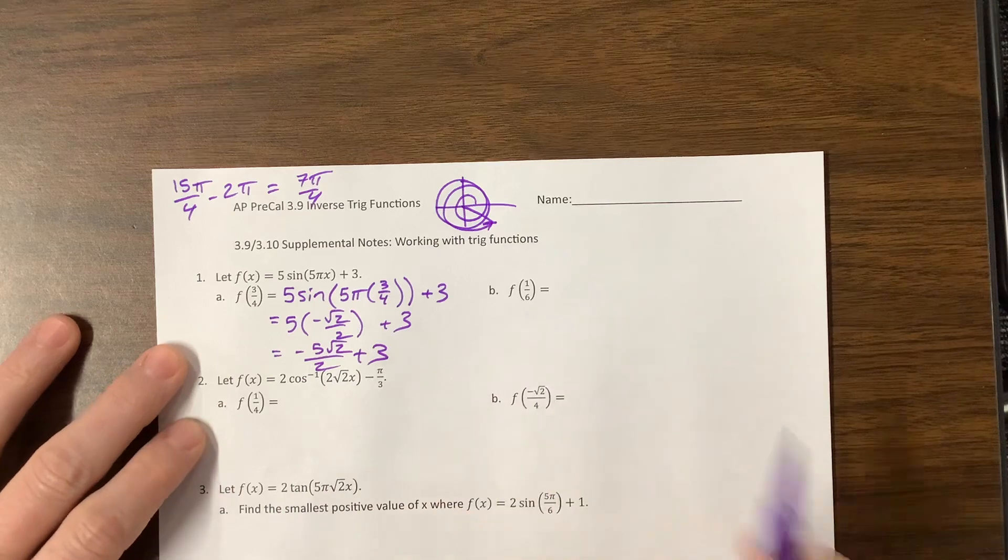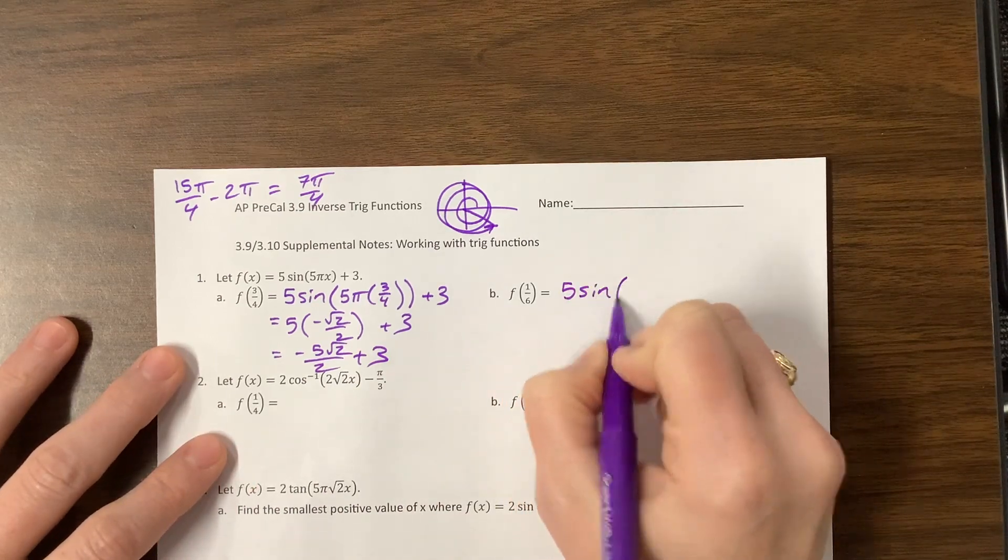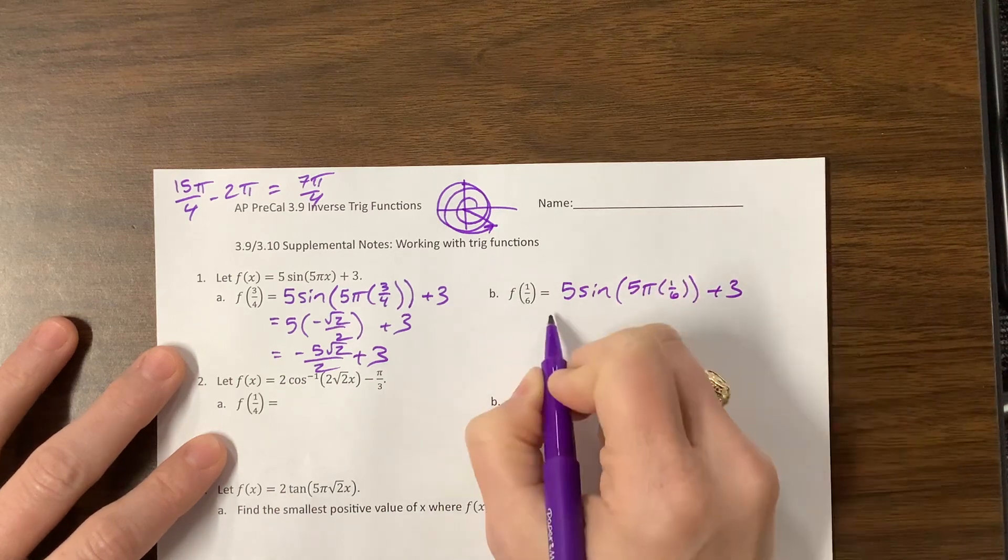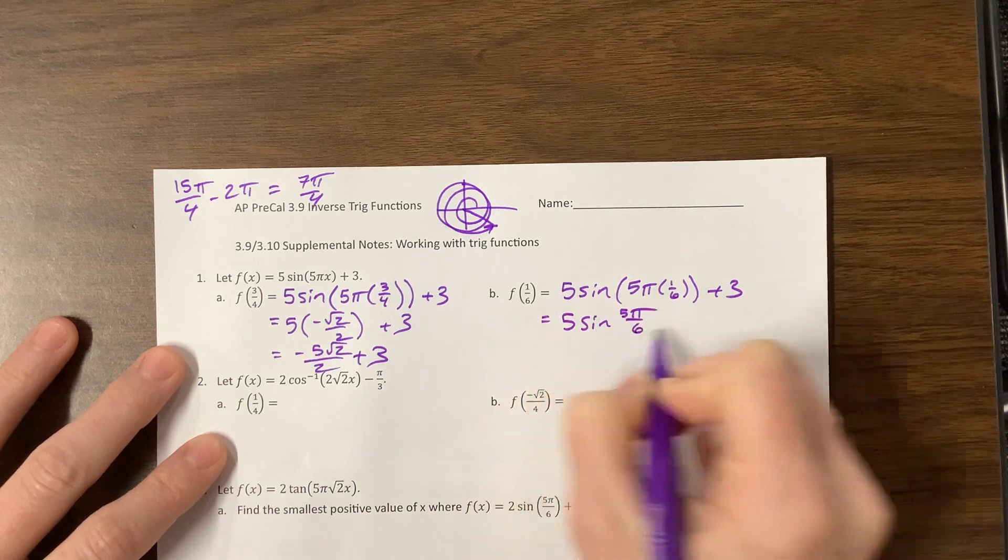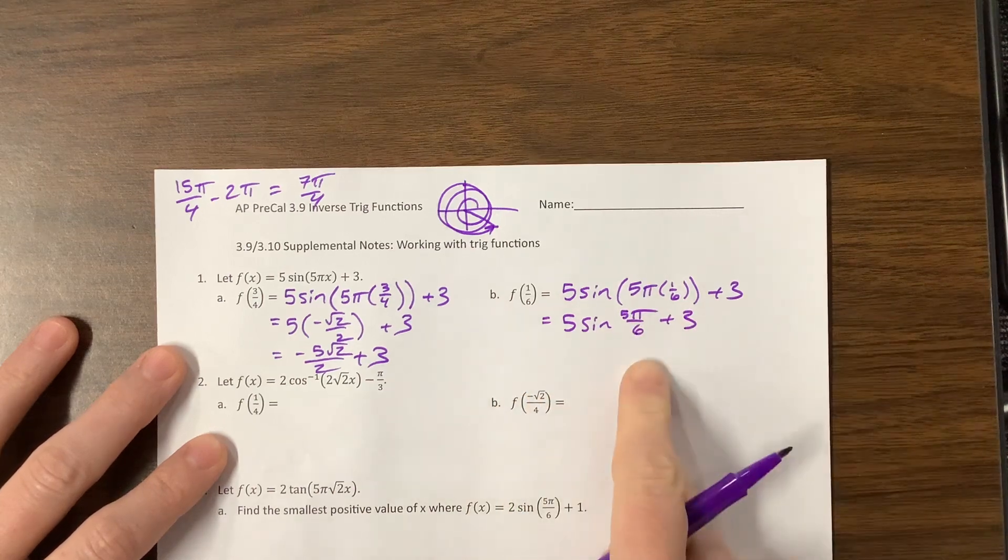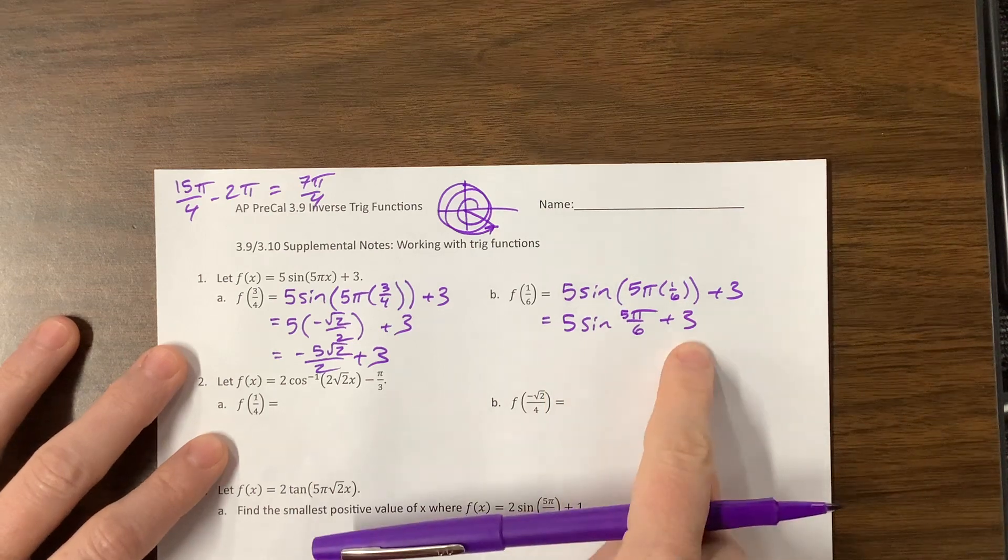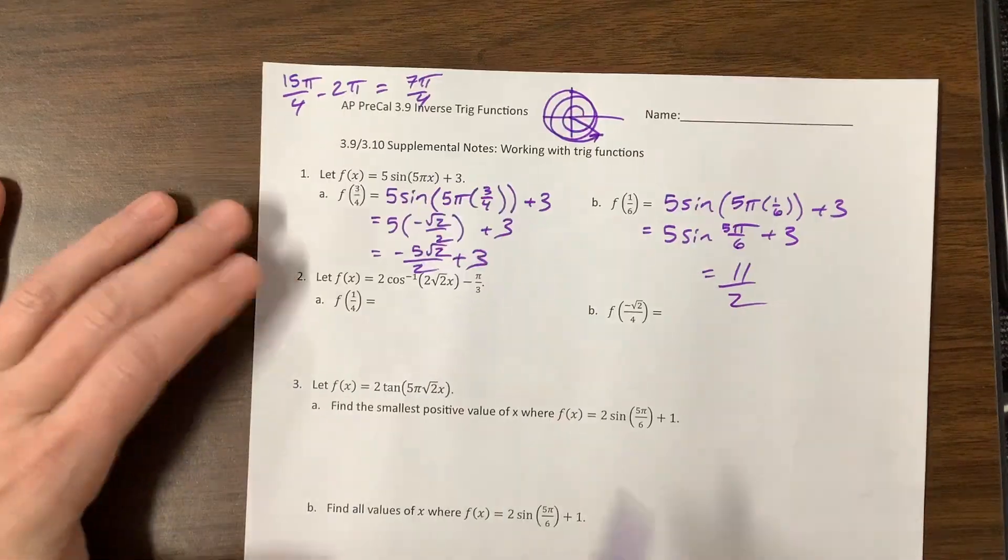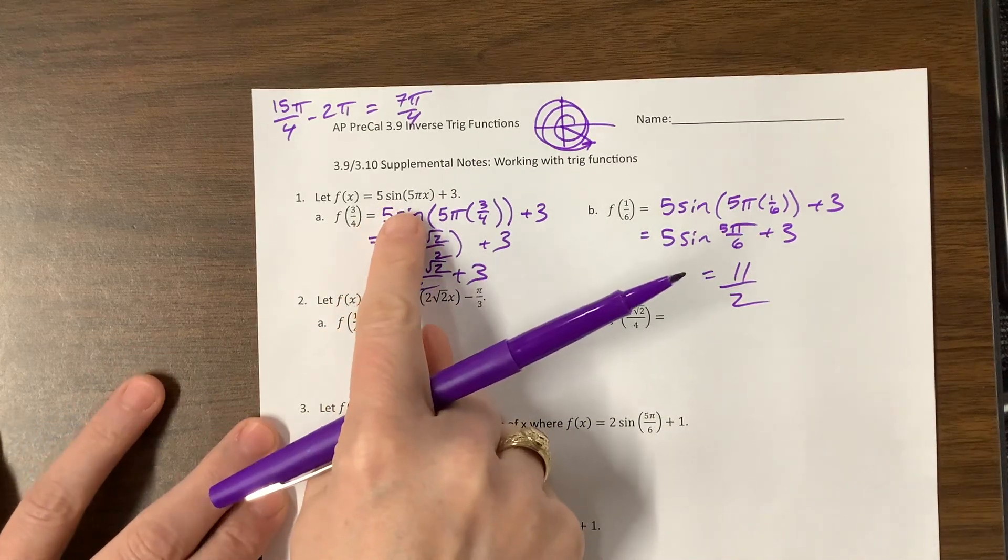Then we could say, what happens when I plug in 1/6? This is 5 sine of 5π times 1/6 plus 3, so 5 sine of 5π/6 plus 3. Sine of 5π/6 is 1/2. This gives me 5/2 plus 6/2, ultimately 11/2.